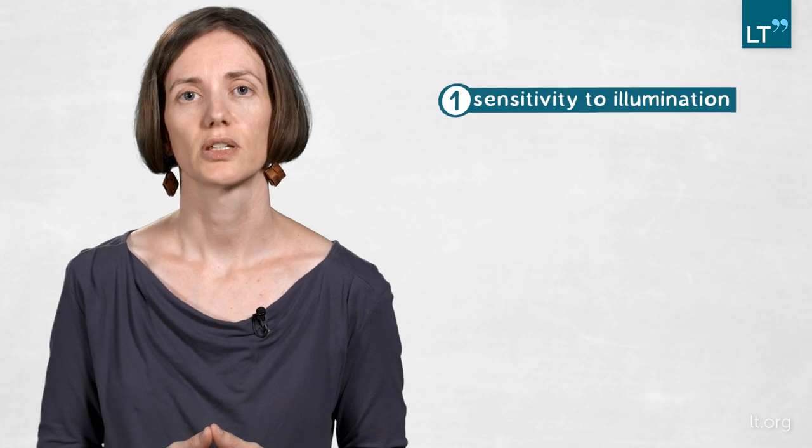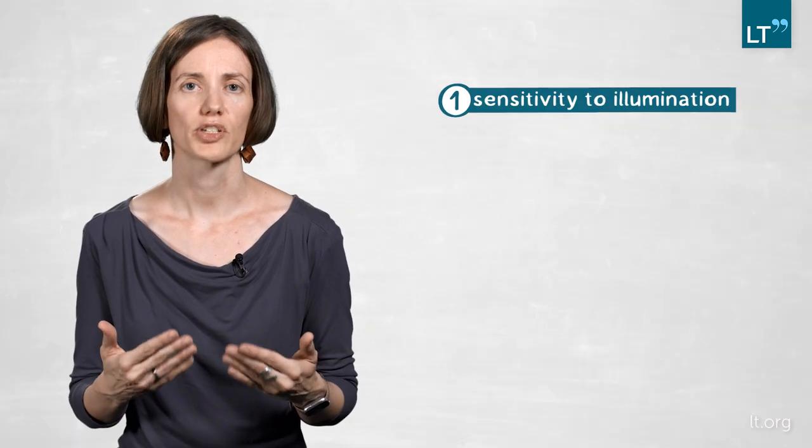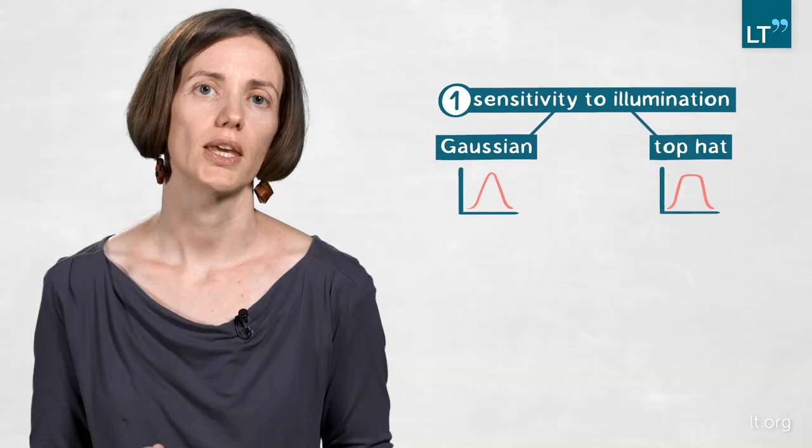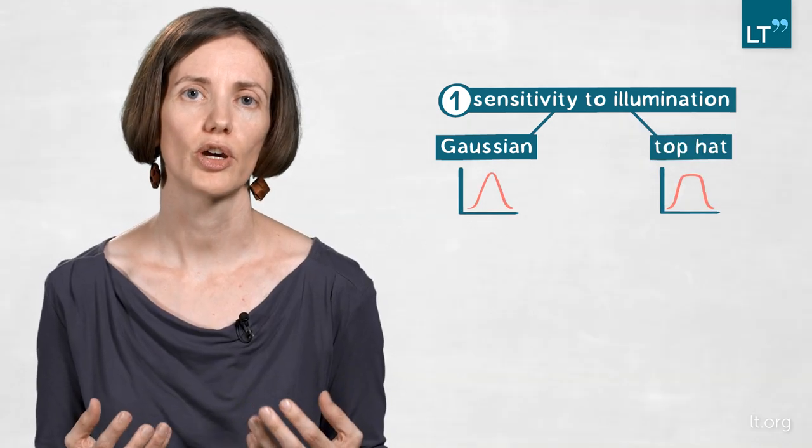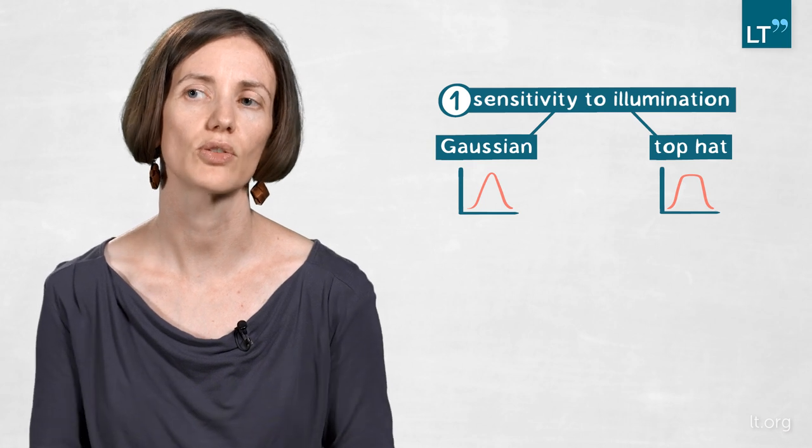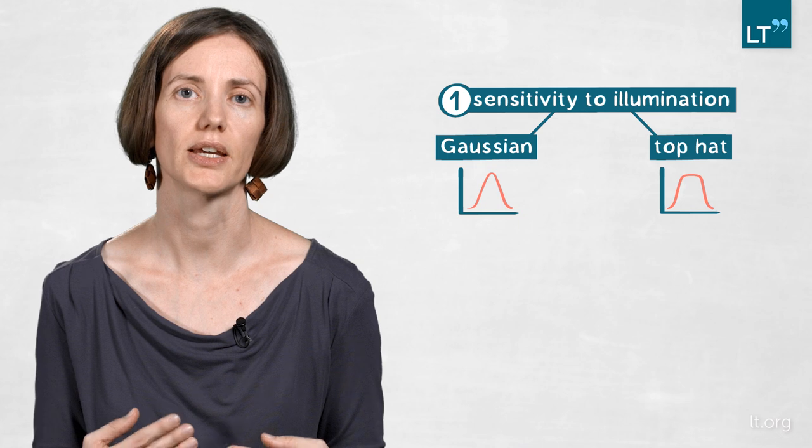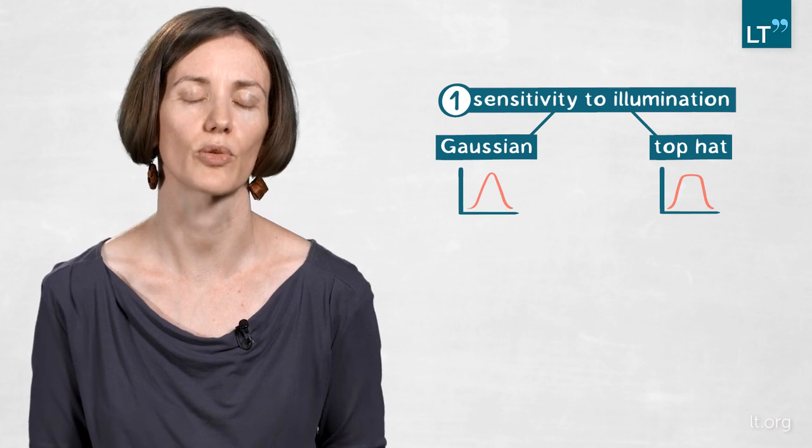So the first thing we looked at was the threshold. By illuminating your specimen either with the Gaussian distribution or with the top-hat distribution, it's essential to know how much light you give into the system to get your fluorescence signal at an optimum so you can actually work with the data.